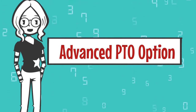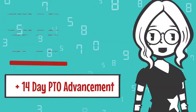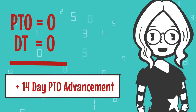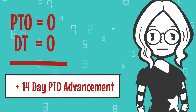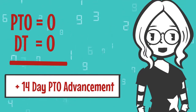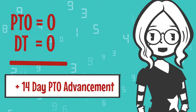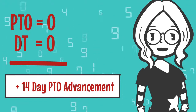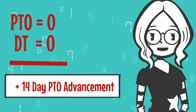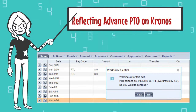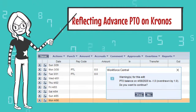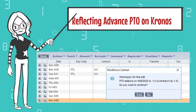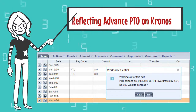Let's see how the option works. If the employee has exhausted all PTO and has no DT time available, the employee may elect an advance on their PTO for up to 14 workdays or shifts based on their authorized hours and regular work schedule. Once the employee goes into a negative balance, you will receive a warning on Chronos. Click Yes to override the warning.